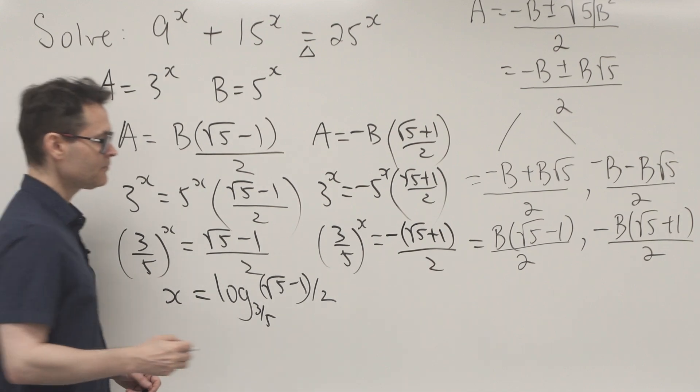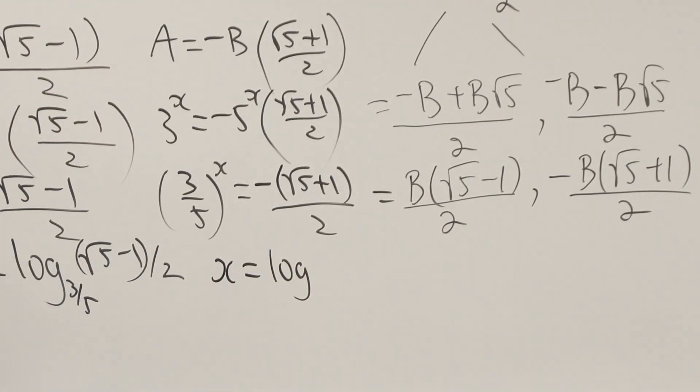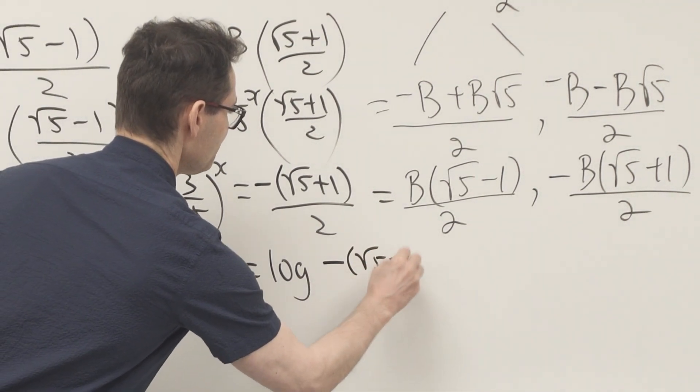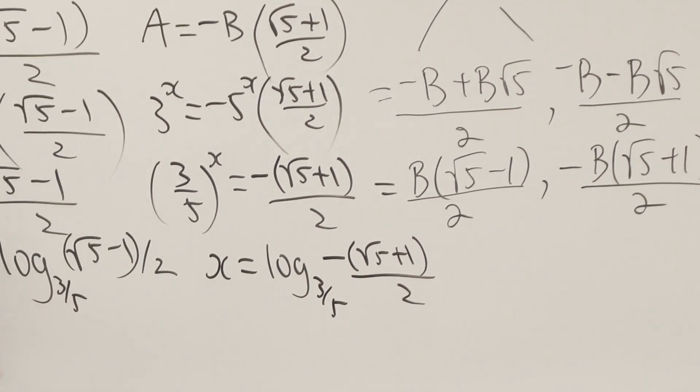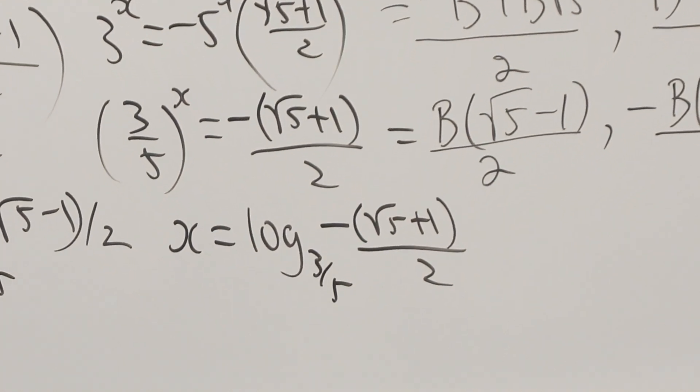Writing this in log form: x = log₍₃/₅₎[-(√5 + 1) / 2]. That's a problem because you cannot take the log of a negative value. So this only has a single answer.